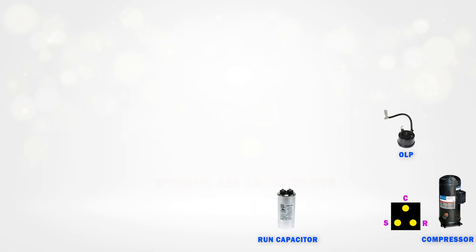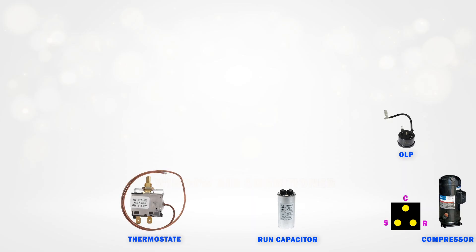Next, let's talk about the thermostat. This is a device that senses the room temperature. When the room becomes cool enough, the thermostat will turn off the compressor. Then, when the temperature increases again, it will turn the compressor back on automatically.